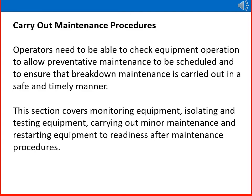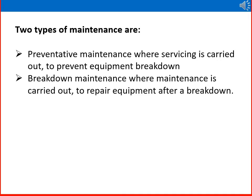Operators need to be able to check equipment operation to allow preventive maintenance to be scheduled and to ensure that breakdown maintenance is carried out in a safe and timely manner. This section covers monitoring equipment, isolating and testing equipment, carrying out minor maintenance, and restarting equipment to readiness after maintenance. There are two types of maintenance: preventive maintenance, where servicing is carried out to prevent equipment breakdown, and breakdown maintenance, where maintenance is carried out to repair equipment after a breakdown.